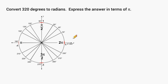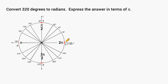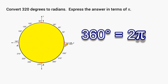What we have here on the screen is a unit circle. What we should have committed to memory is that if you start at 0 degrees and go halfway around your circle to 180 degrees, that would be equal to pi in terms of radians. So if you go all the way around the circle, which is basically 2 times 180, you would have 2 pi in terms of radians.